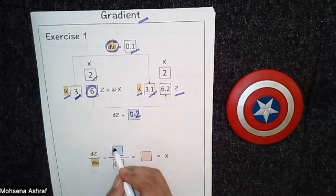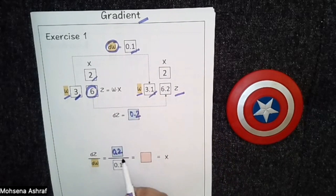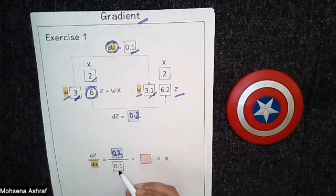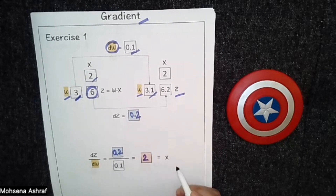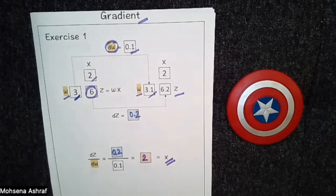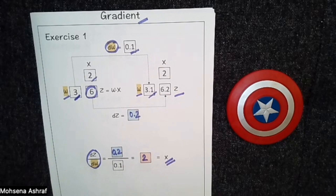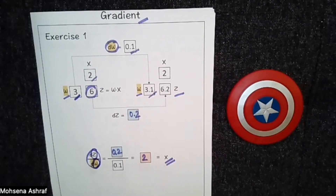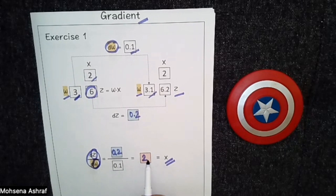Now if we put the value of dz, which is 0.2, and divide dz by dw, that is 0.2 divided by 0.1, we get 2. And we can see that it is the value of x. So dz/dw typically denotes the rate of change of the variable z with respect to the variable w. In our case, dz/dw is 2, which means that z is increasing at a constant rate of 2 units per unit of w.